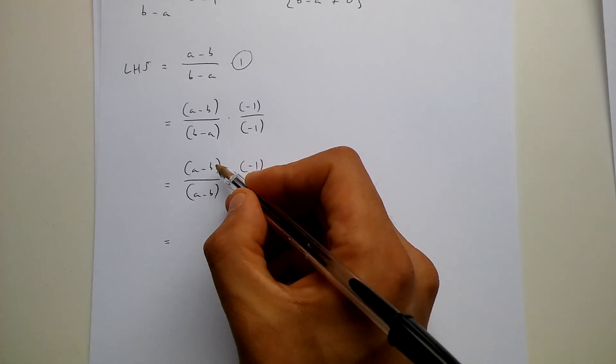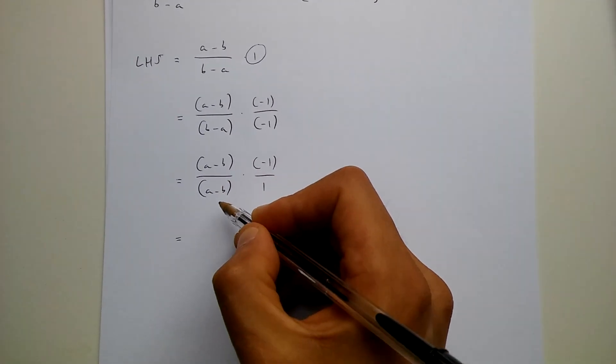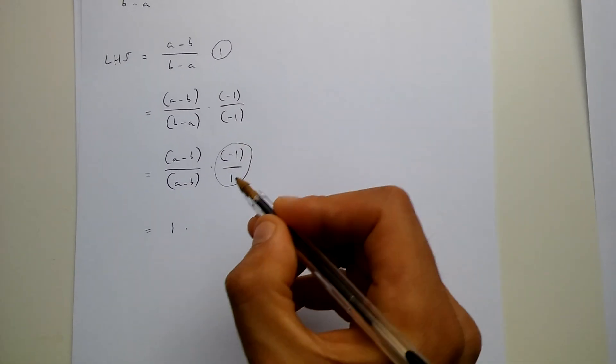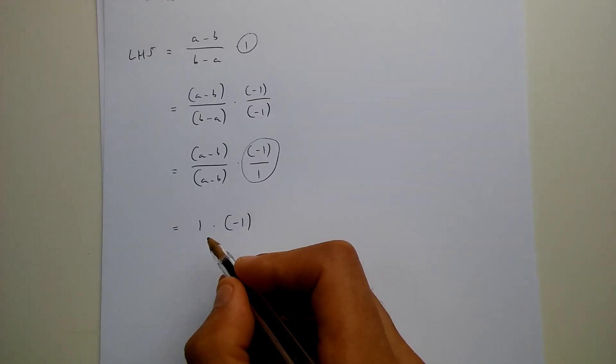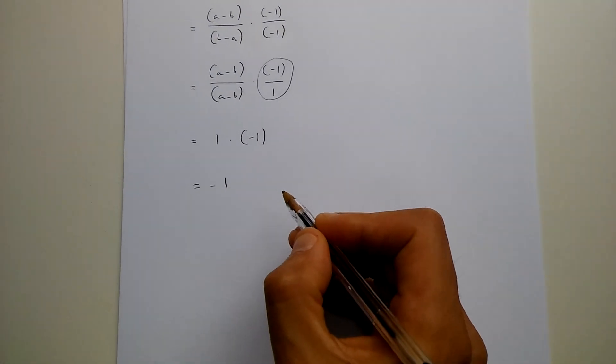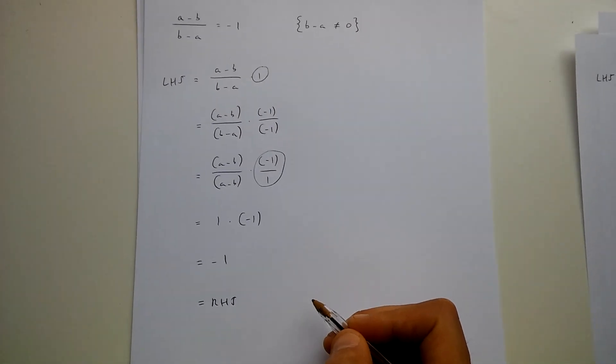Now a minus b over a minus b is equal to 1 and this over here is equal to minus 1. So what we have is 1 times minus 1 and this is equal to minus 1 which is equal to the right hand side.